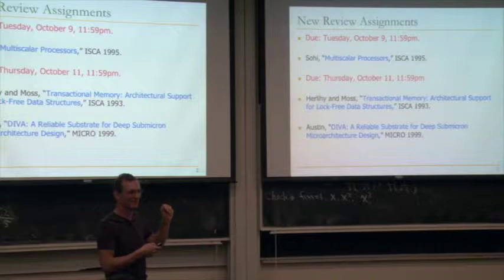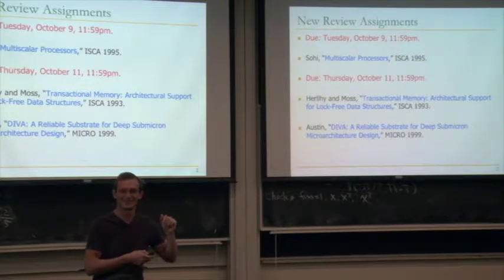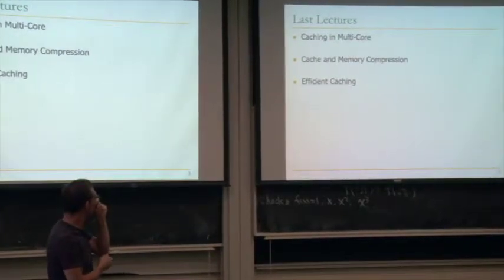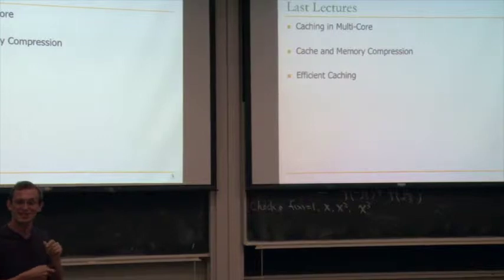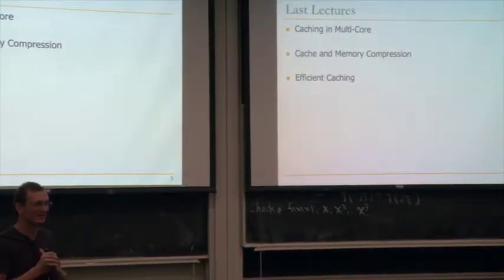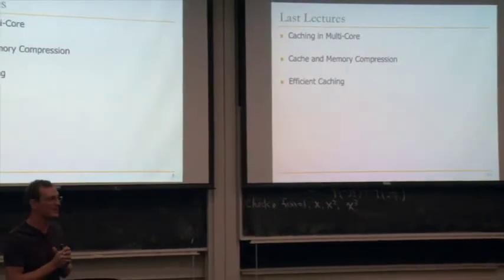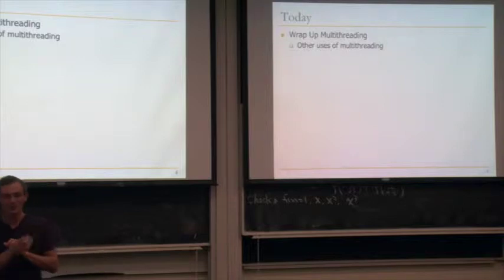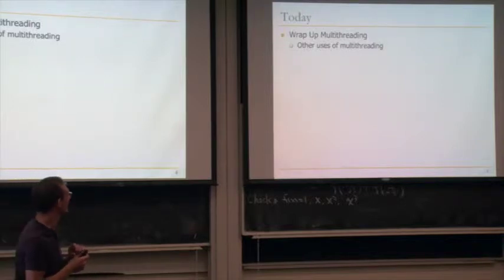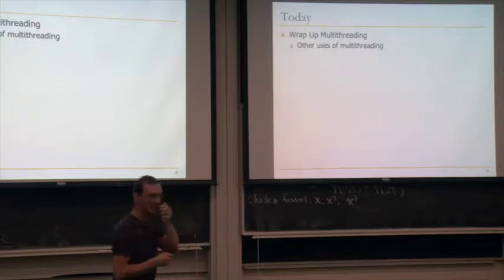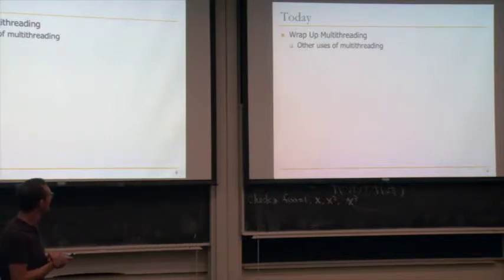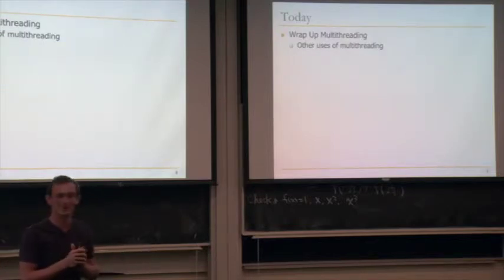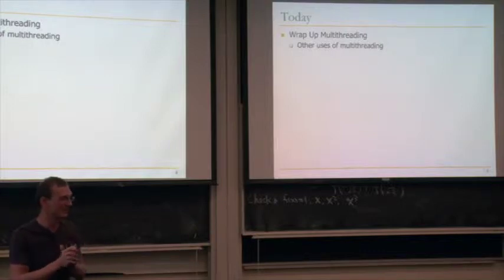I also assigned the original transactional memory paper, which is being implemented today in many different designs. And another paper we will talk about today is the DIVA micro-architecture. Last lectures I covered caching, cache and memory compression, and efficient caching. Today we'll hopefully wrap up multithreading and smoothly transition into speculation, which is one of the uses of multithreading in existing parallel systems.